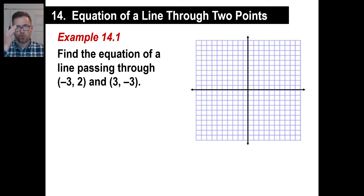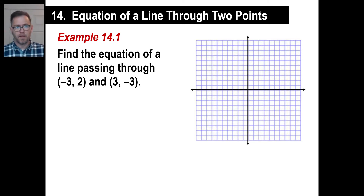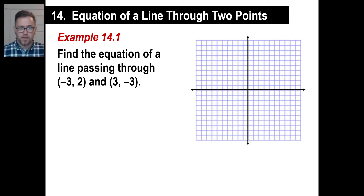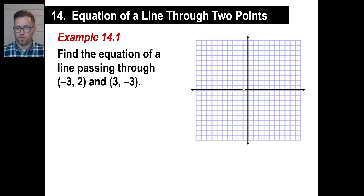This is an example — so get your graph paper out. Let's take a look. They'll tell you: find the equation of a line passing through these two points. Here's what you're going to want to do: take the two points and graph them. So negative three, two — go one, two, three, and then two. That's your first point.